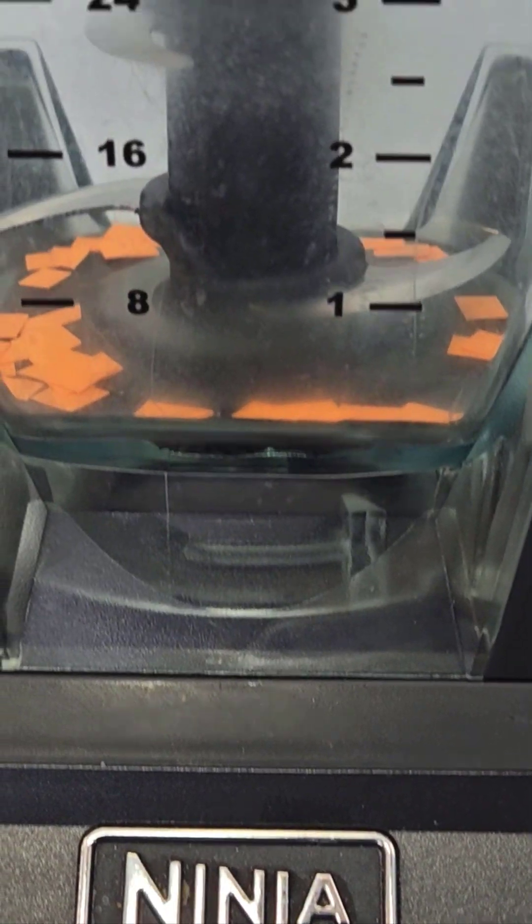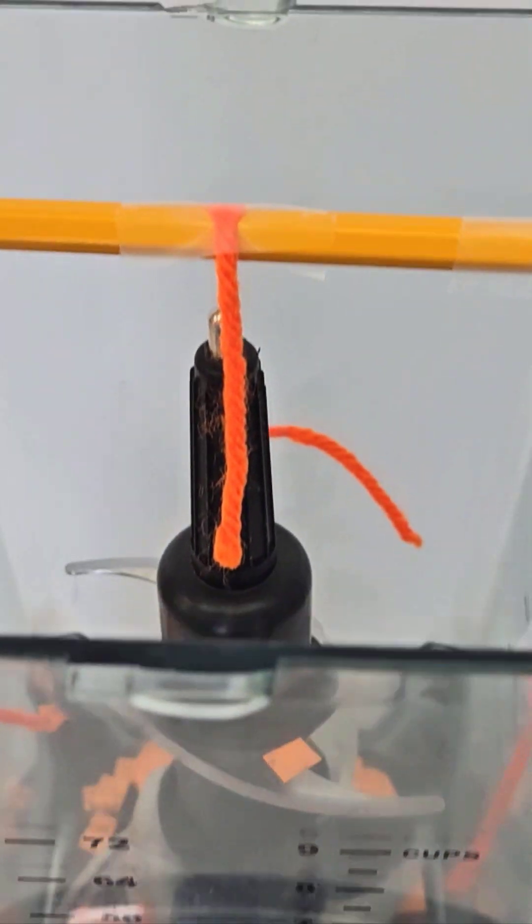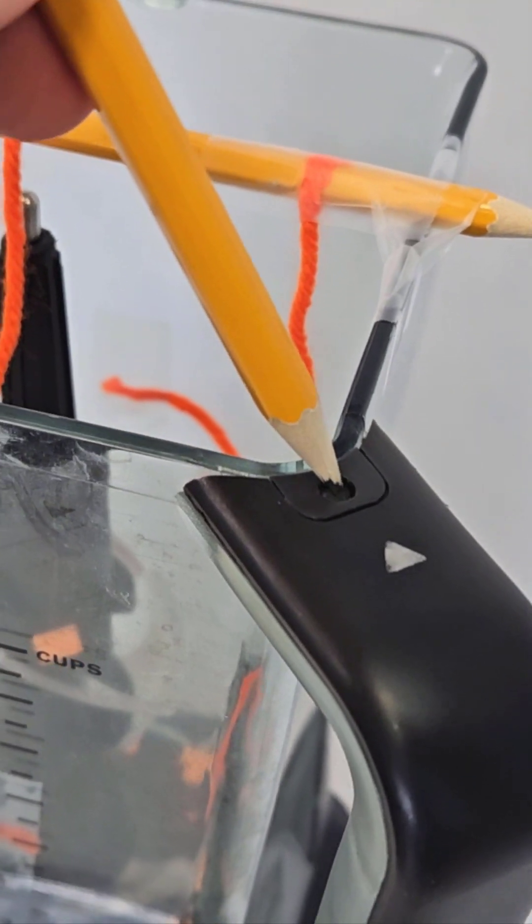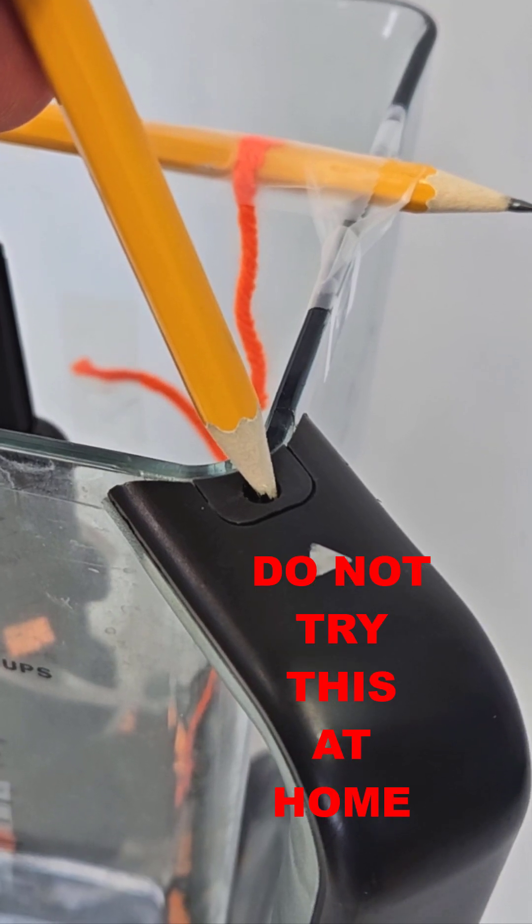Instead, I chopped up some bits of paper that would be easier to clean up and taped streamers at various locations around the blender so I could see the direction of airflow. Note that I had to bypass the safety mechanism on my blender that normally prevents it from operating without the lid on, so please do not try this at home.